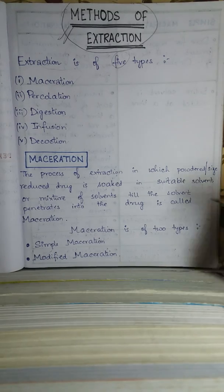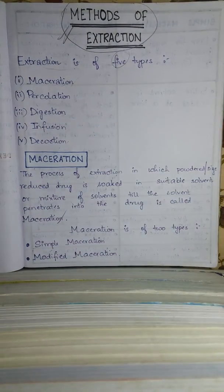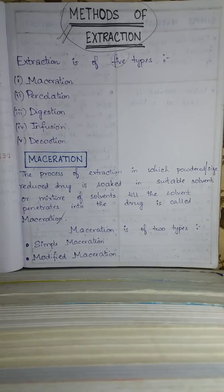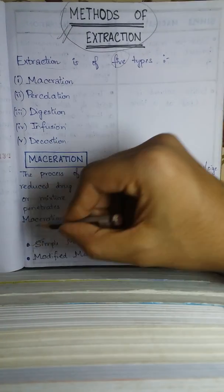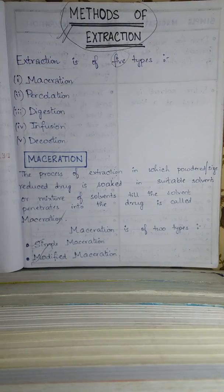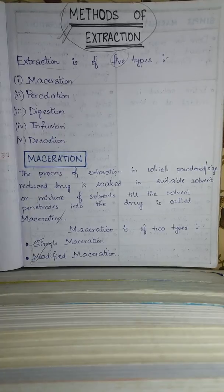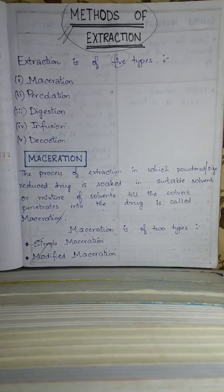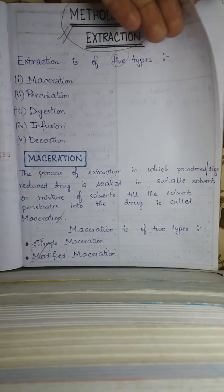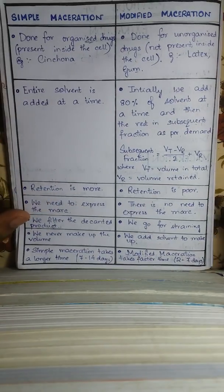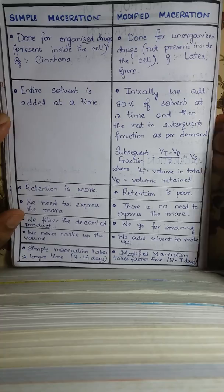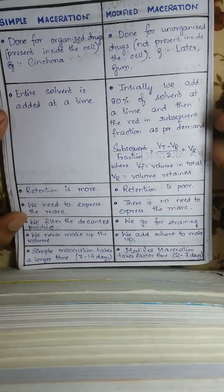Maceration is of two types: one is simple maceration and the other is modified maceration. There are a lot of differences between simple maceration and modified maceration in B.Pharm first year, so I have written them in the form of a difference table.